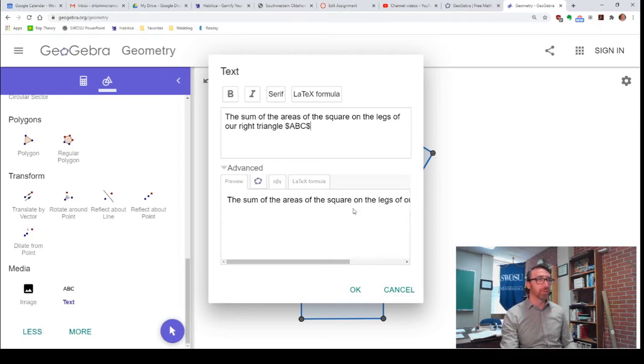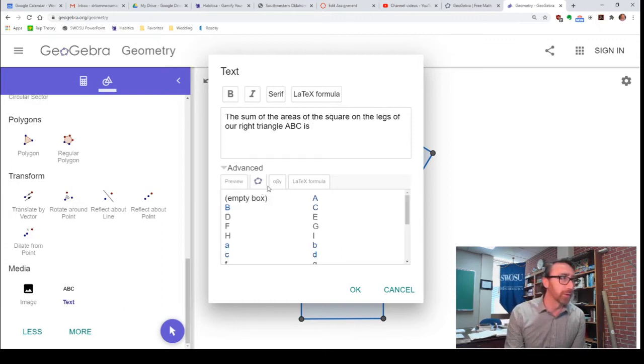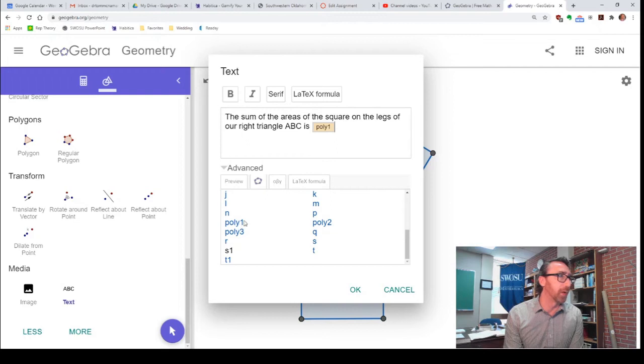And you can put little LaTeX codes in here, A, B, C. You can put that in math mode. Our right triangle A, B, C is... Now, down here, you see that little menu there? It looks like the GeoGebra symbol. You can choose variables. I want Poly 1 plus Poly 2. Let me just put this in right now.